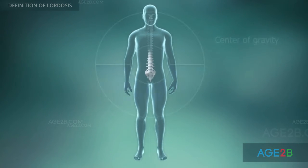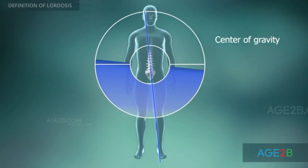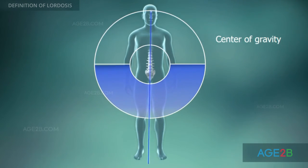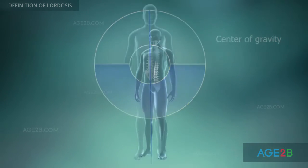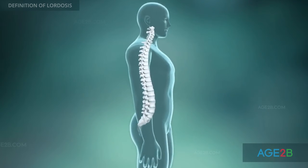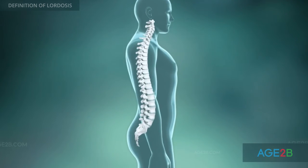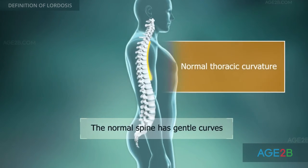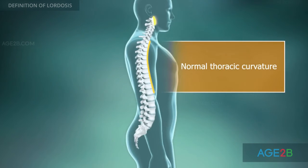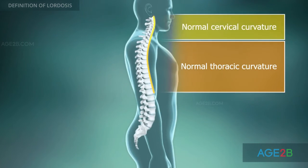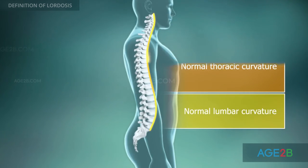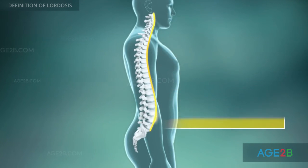The lumbar vertebrae provide stability during vertical movement by helping maintain your center of gravity. The normal human spine is not perfectly straight when viewed from the side. The thoracic section has a mild forward curvature ranging from 20 to 50 degrees, while the cervical and lumbar curves are reversed.